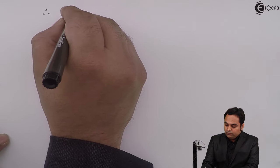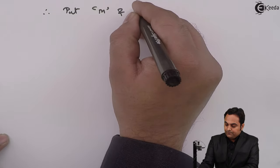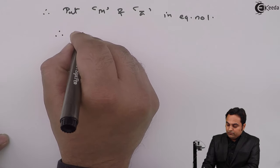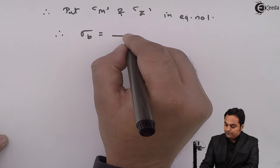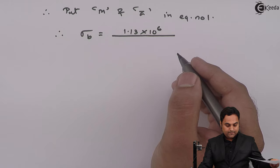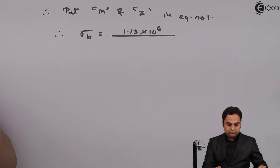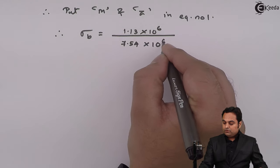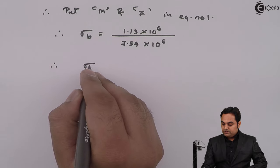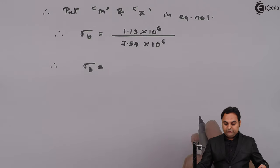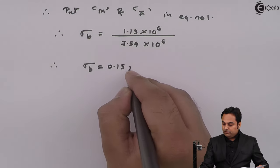Substituting M and Z into equation σB = M / Z: σB = 1.13×10⁶ / 7.54×10⁶ = 0.15 N/mm².